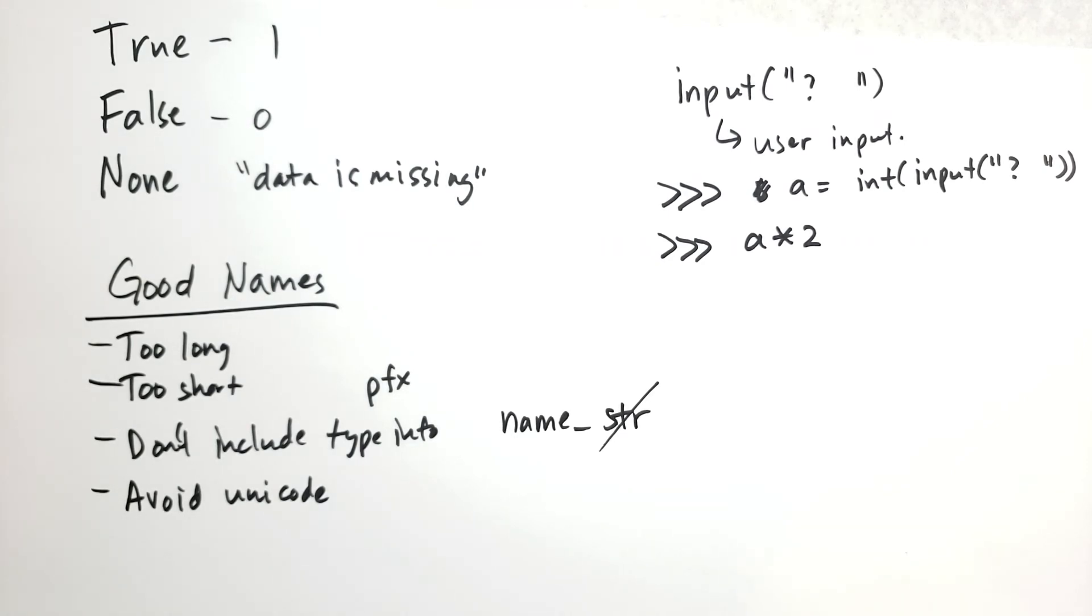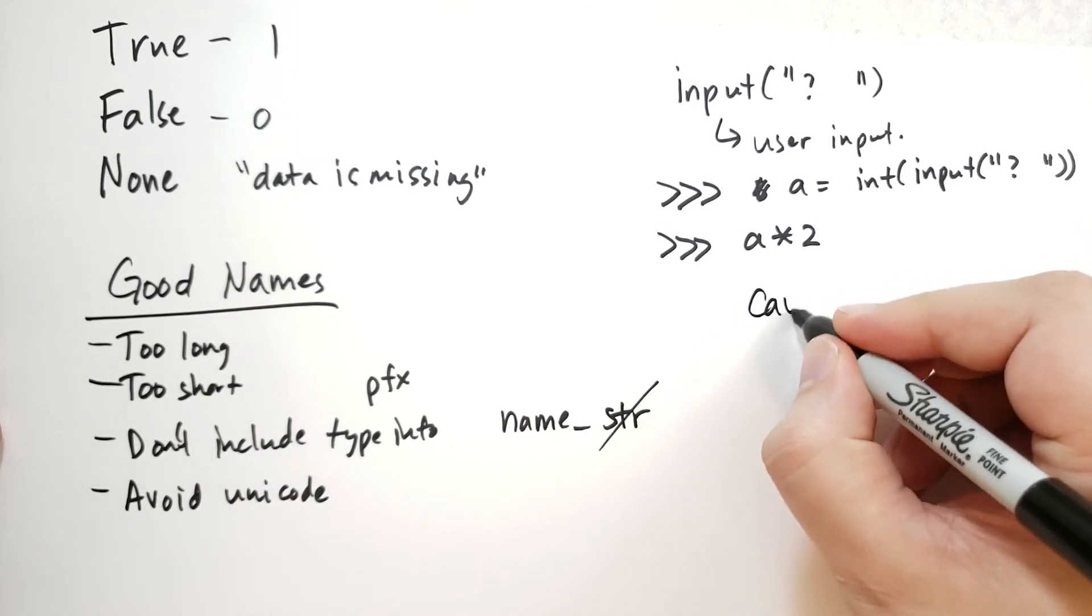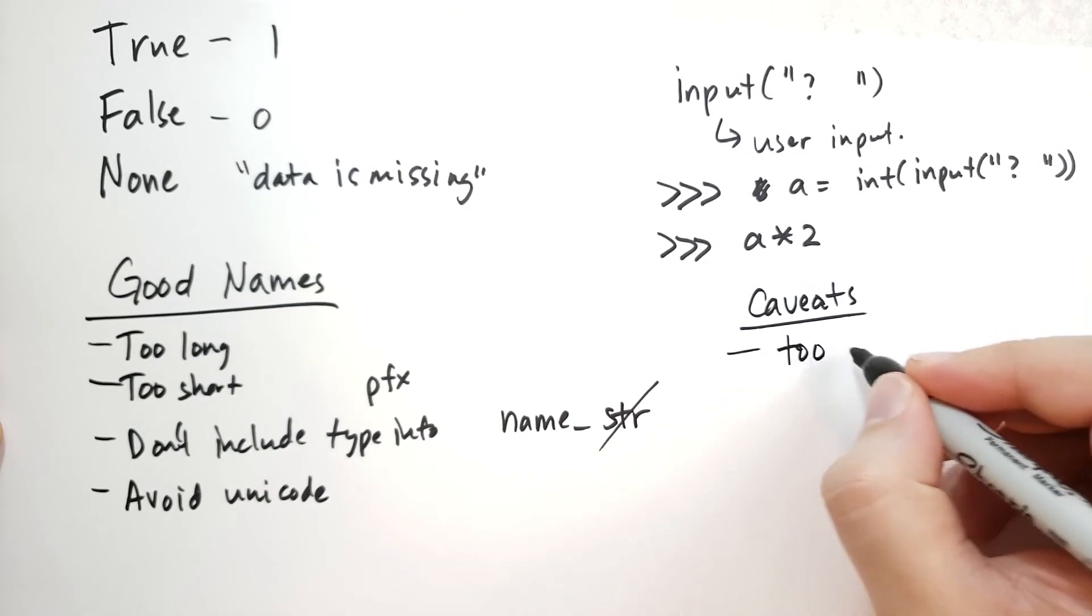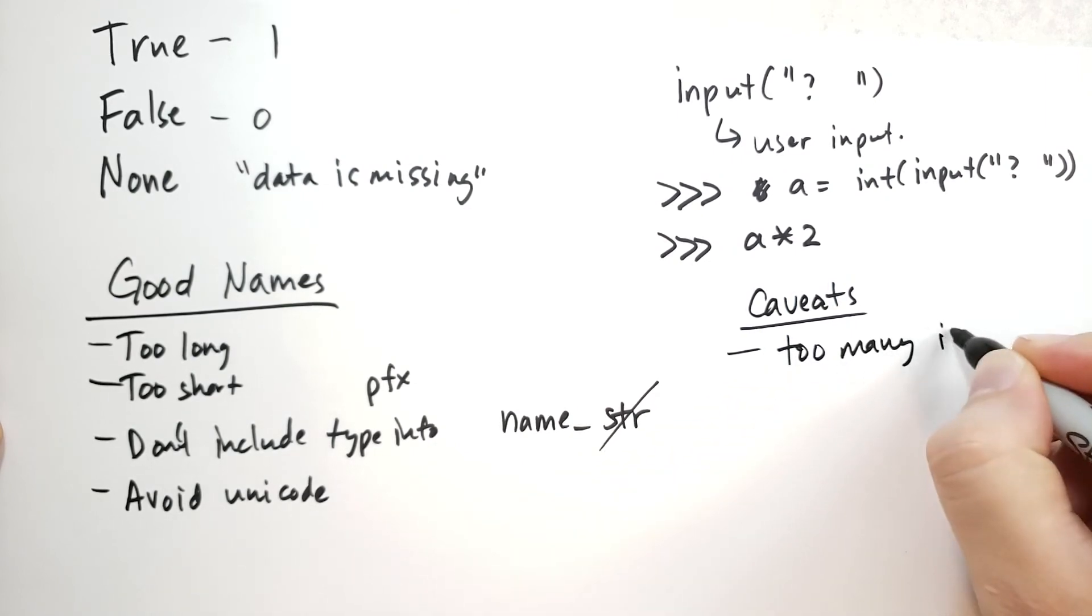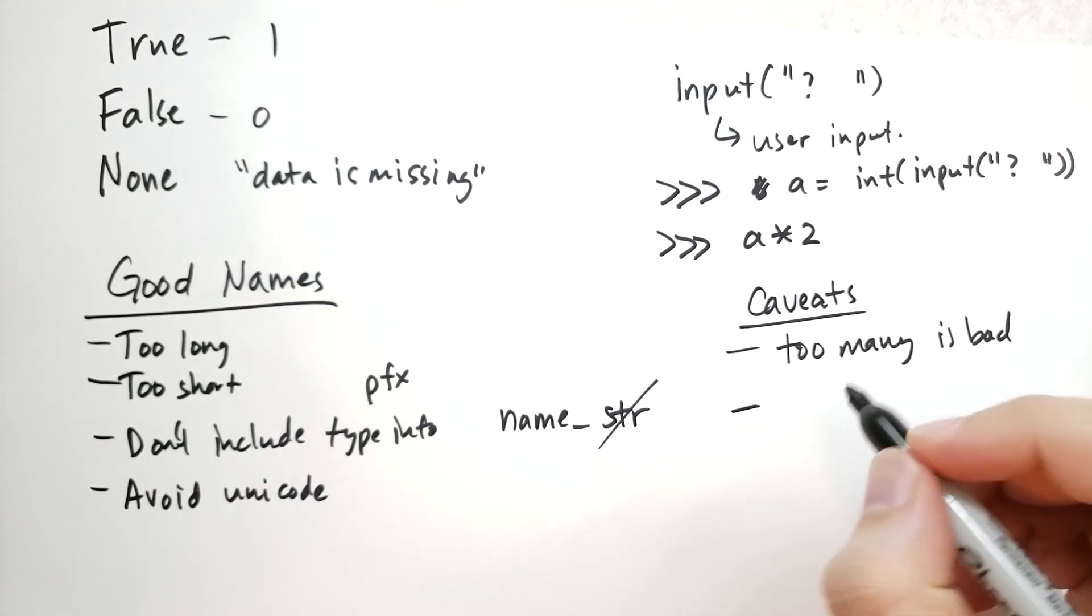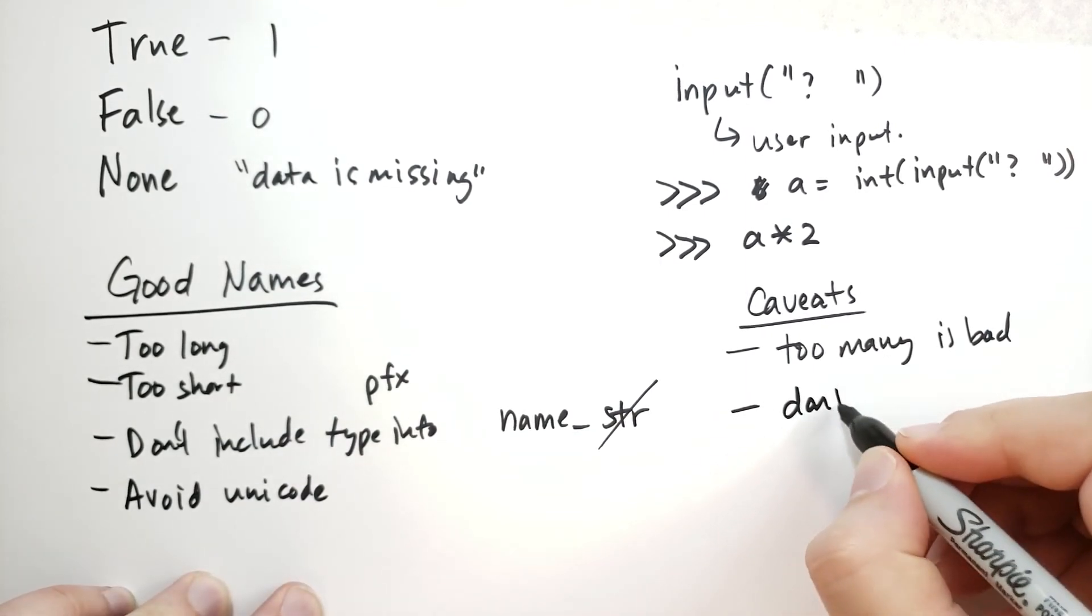And some caveats, warnings with variables. Don't use too many. Every variable you kind of have to keep inside your head when you're reading the program. If you have too many variables, then it gets really confusing, so try to avoid that. Remember the semantic meaning. Don't change it.